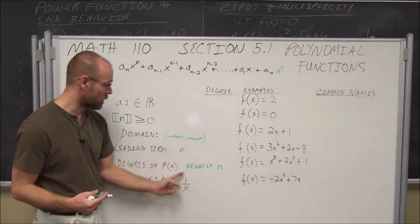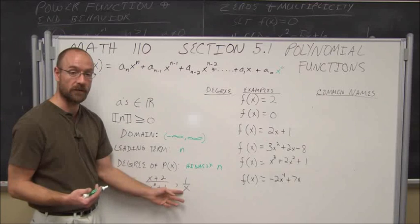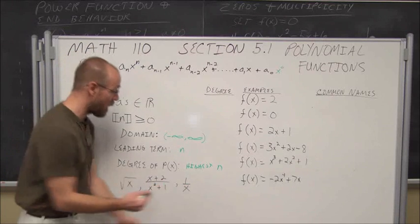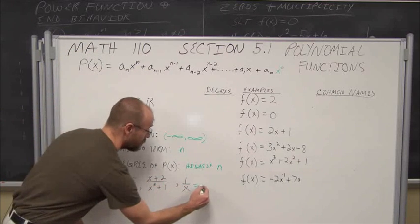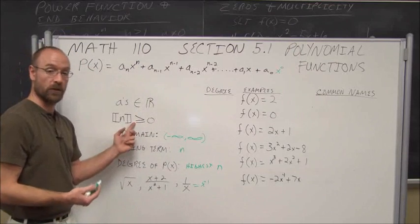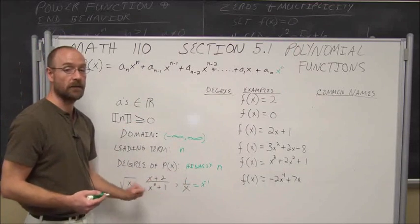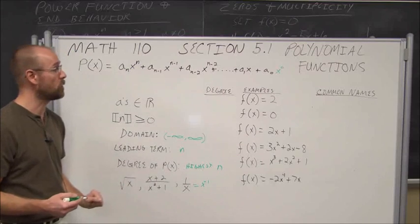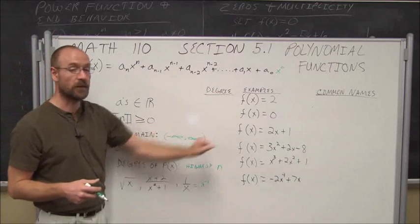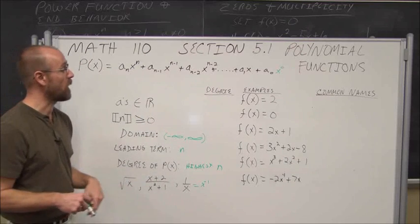And the reciprocal function — 1/x — again has x in the denominator, giving us a domain restriction. It can be written as x to the negative first, which is not an integer greater than 0. So these are not considered polynomials, and in the next example we'll see where this applies.